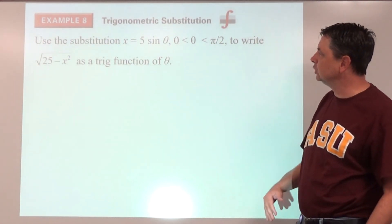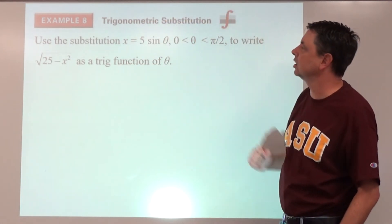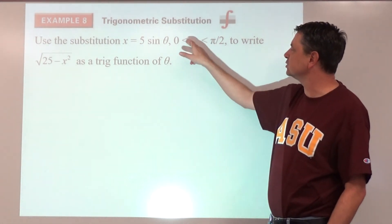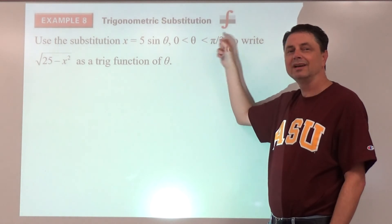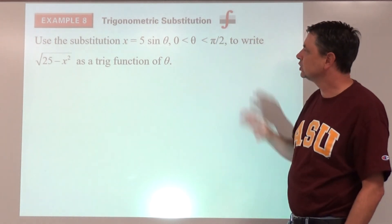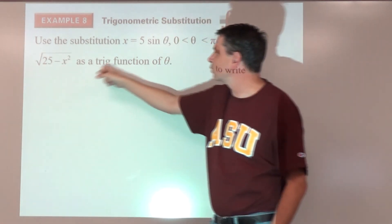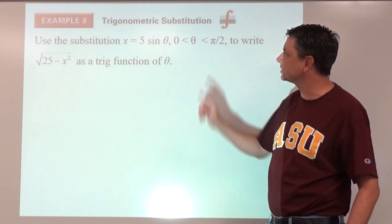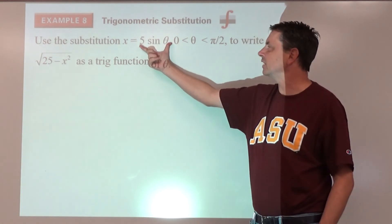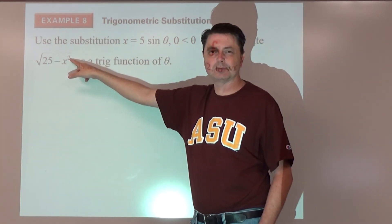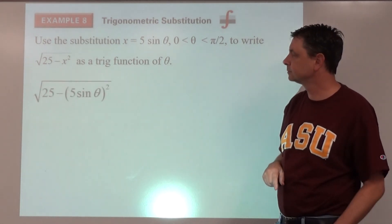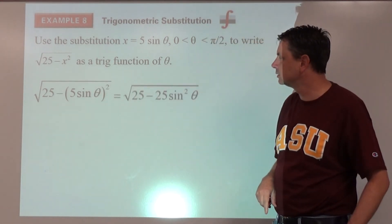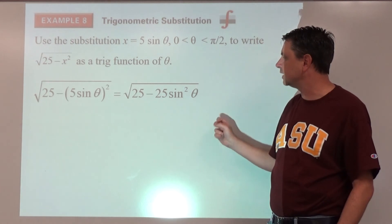Example eight: a calculus trig substitution problem. Given x equals five sine theta, and theta is between zero and pi over two — meaning we're in quadrant one — rewrite the square root of twenty-five minus x squared as a trig function of theta. We substitute x with five sine theta, and square it inside the radical.